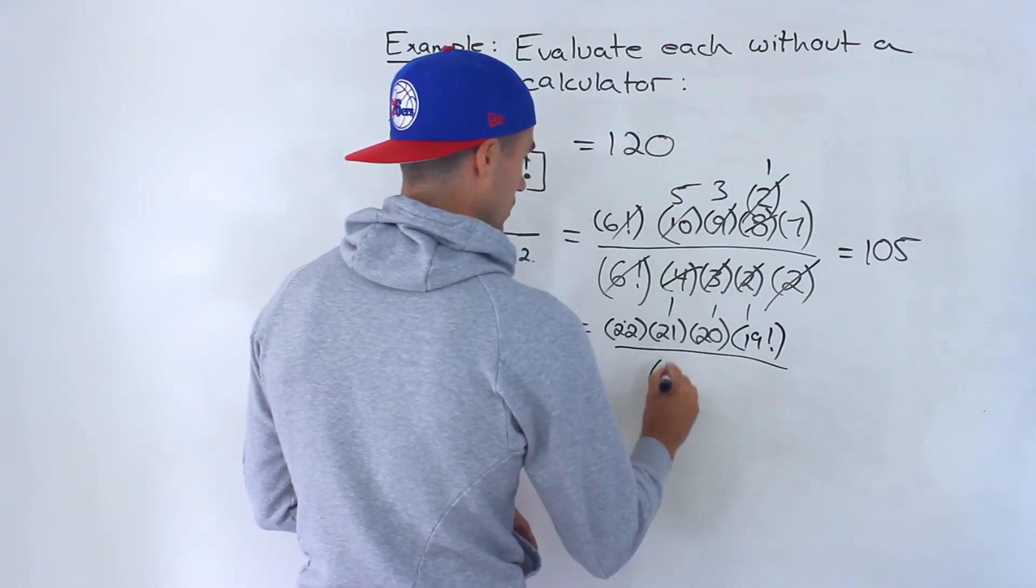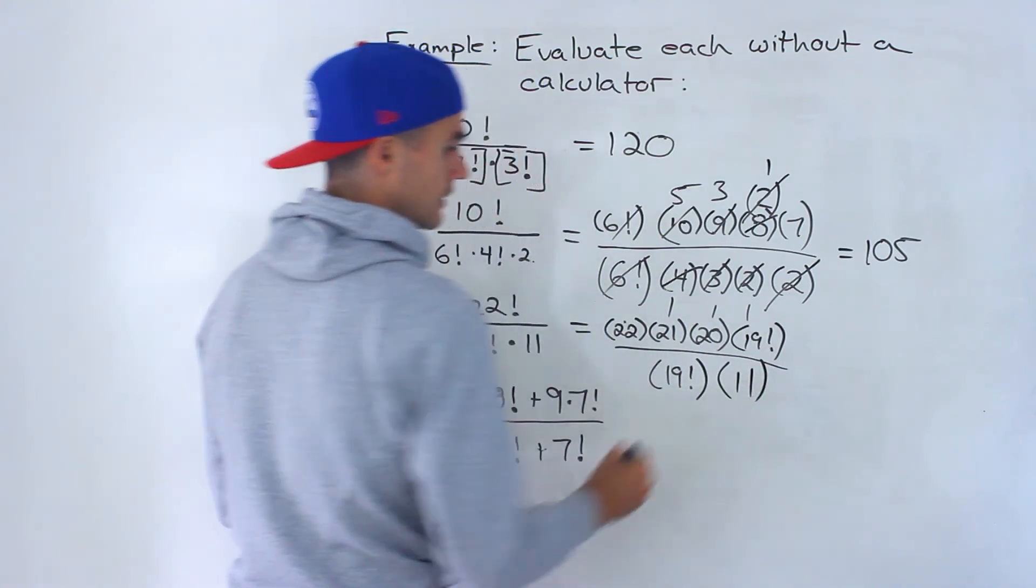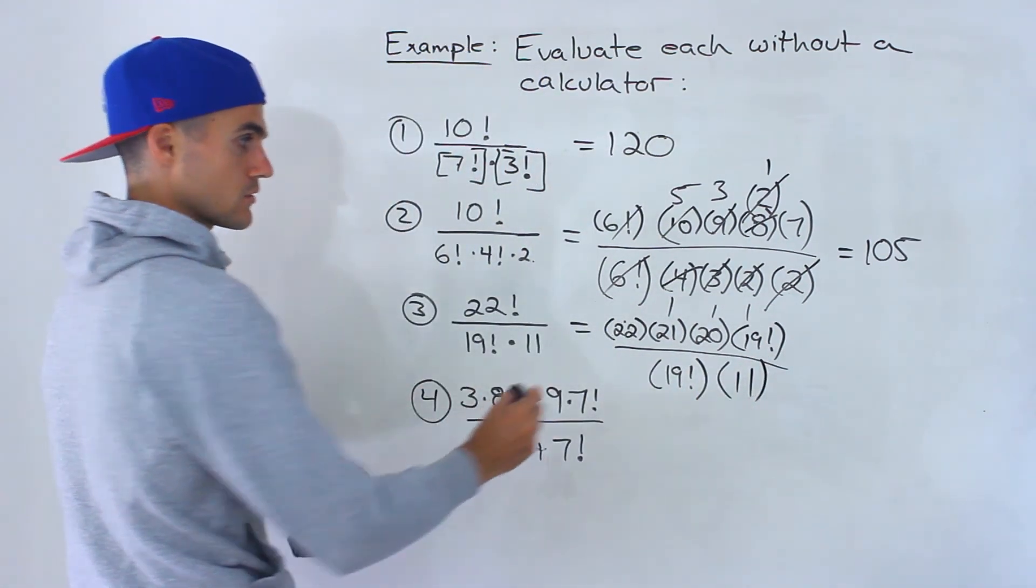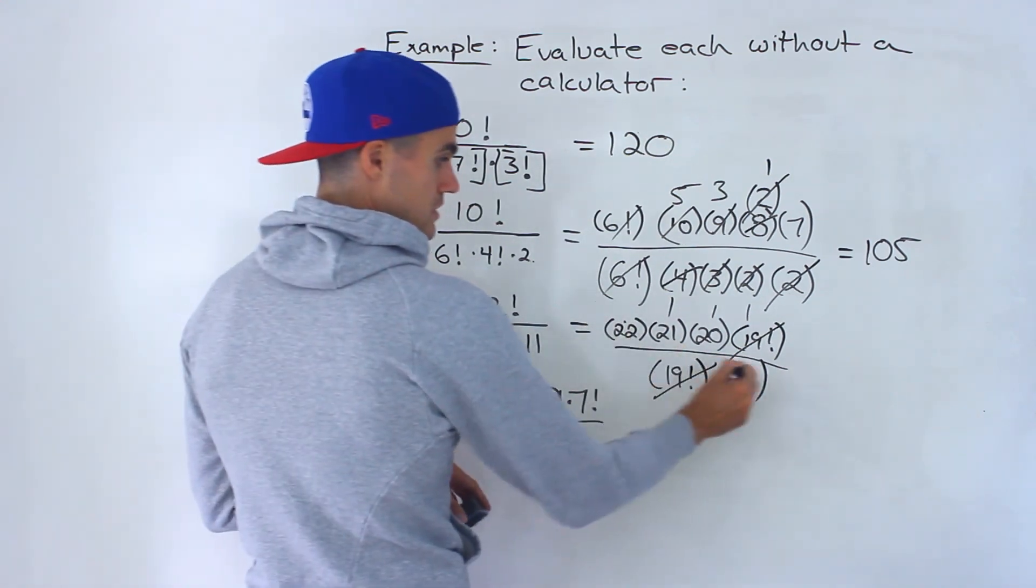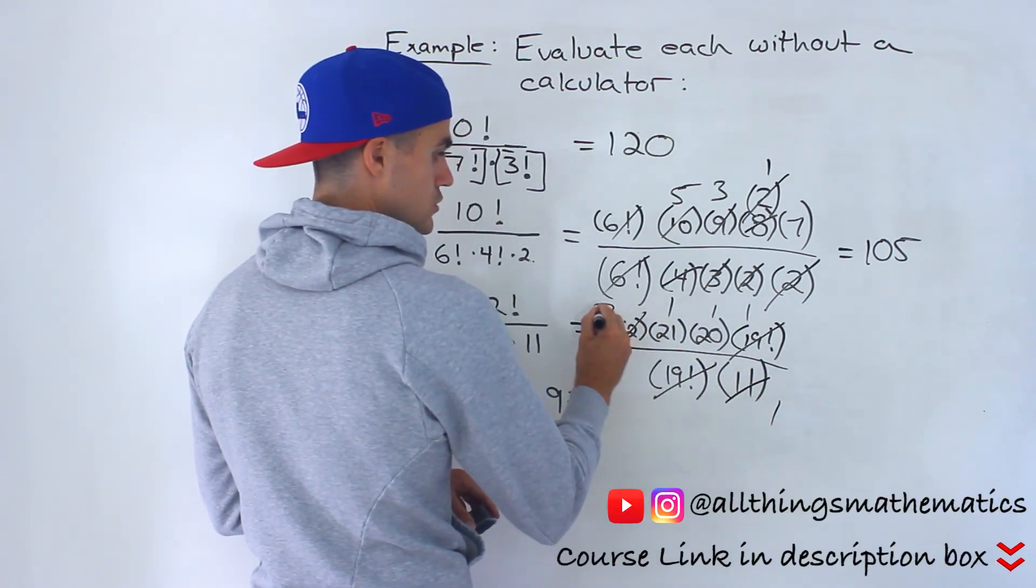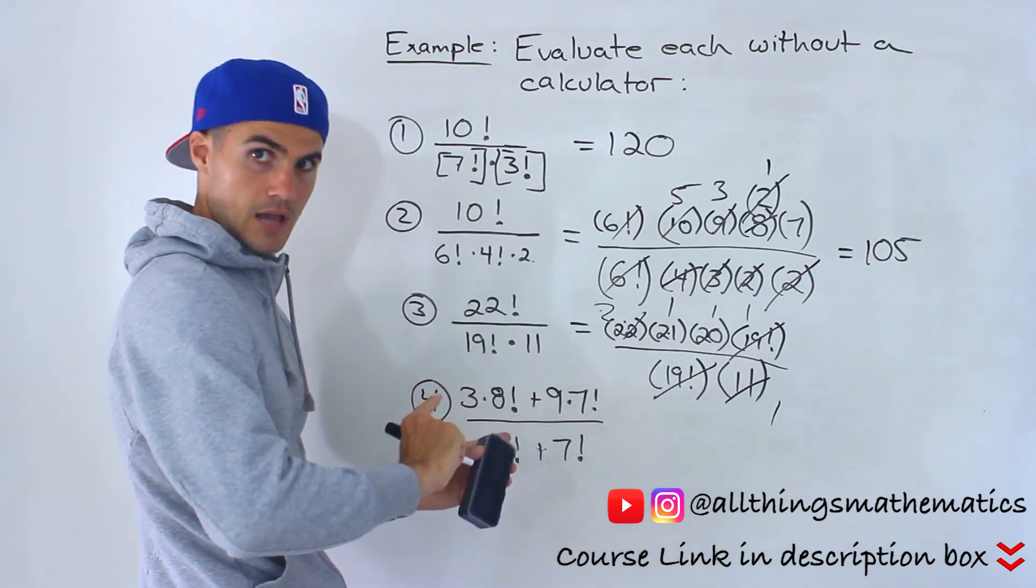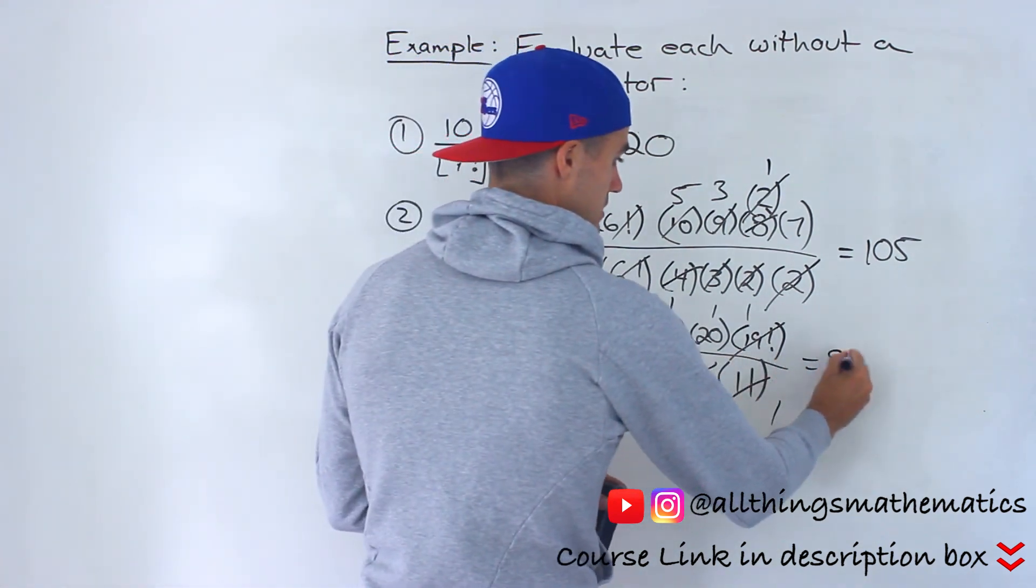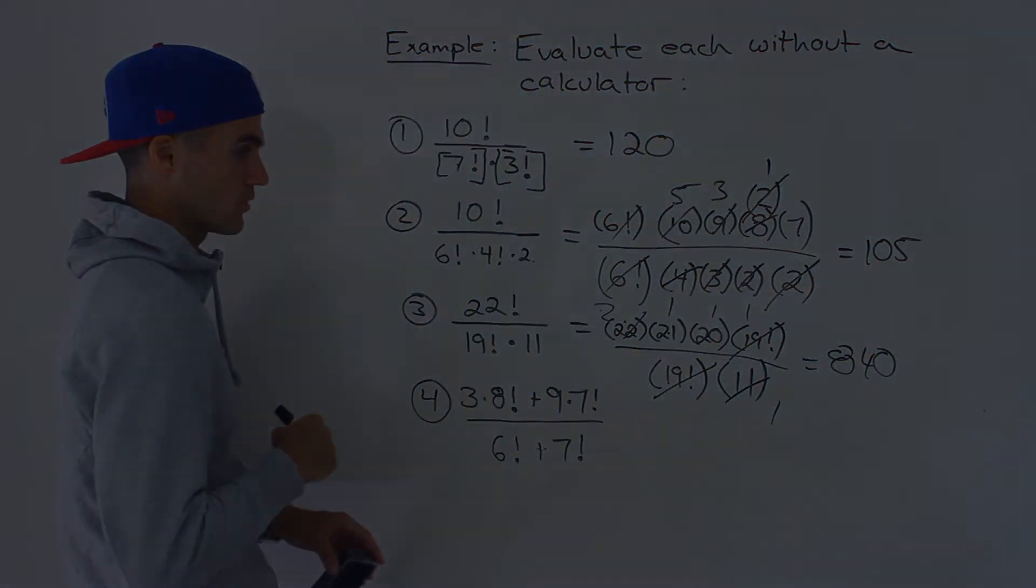All over 19 factorial times 11. 11 is just by itself. Notice this cancels out. 11 goes into 22 twice. 2 times 21 is 42 times 20 gives us 840. So that ends up being the answer to number 3.